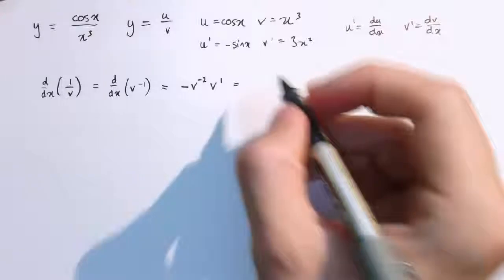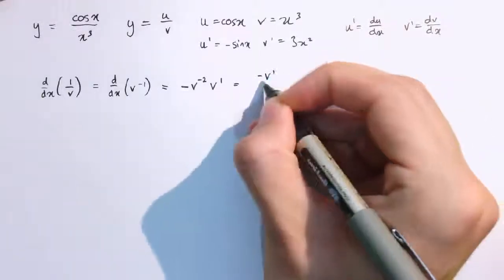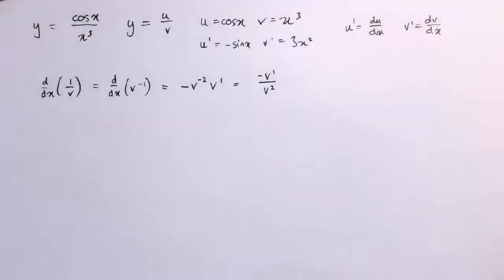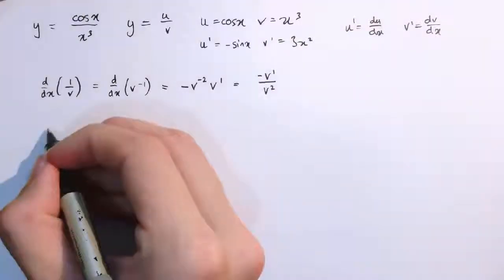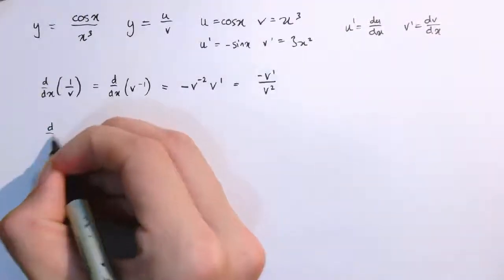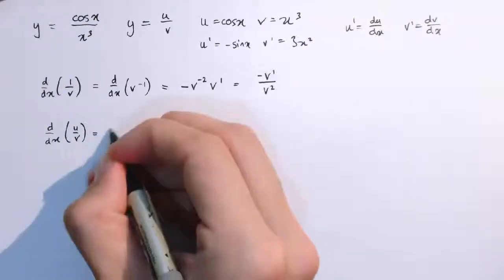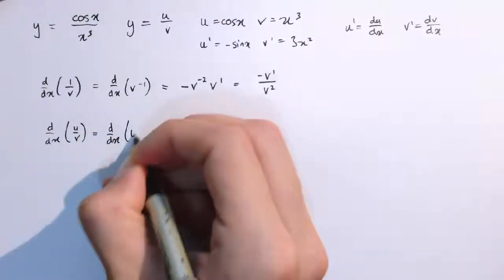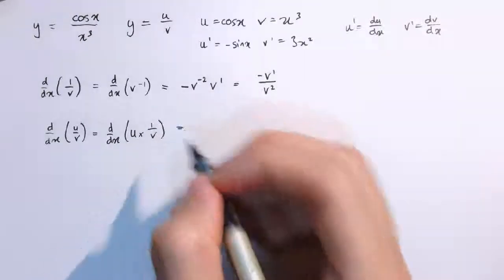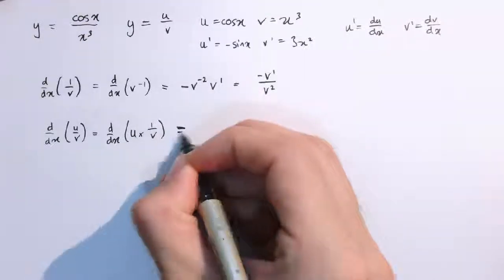So if you like, I could write that as minus v dashed over v squared. So to differentiate u over v, which is what we want to do then, I can think of this as the derivative of u times 1 over v. And then apply the product rule.